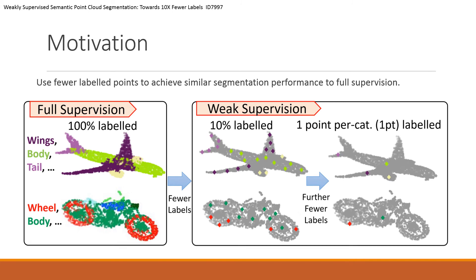To alleviate the labeling efforts, we propose to use fewer labeled points, termed as weak supervision. In specific, we assume less than 10% of points are provided with ground truth.